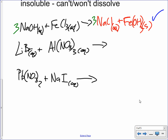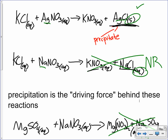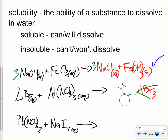Next one: lithium bromide and aluminum nitrate. Double replacement gives us lithium nitrate and aluminum bromide. Nitrates are soluble with no exceptions, so lithium nitrate will dissolve. For aluminum bromide: bromides are soluble and aluminum is no exception. They'll both dissolve, so both products are aqueous — no reaction here.